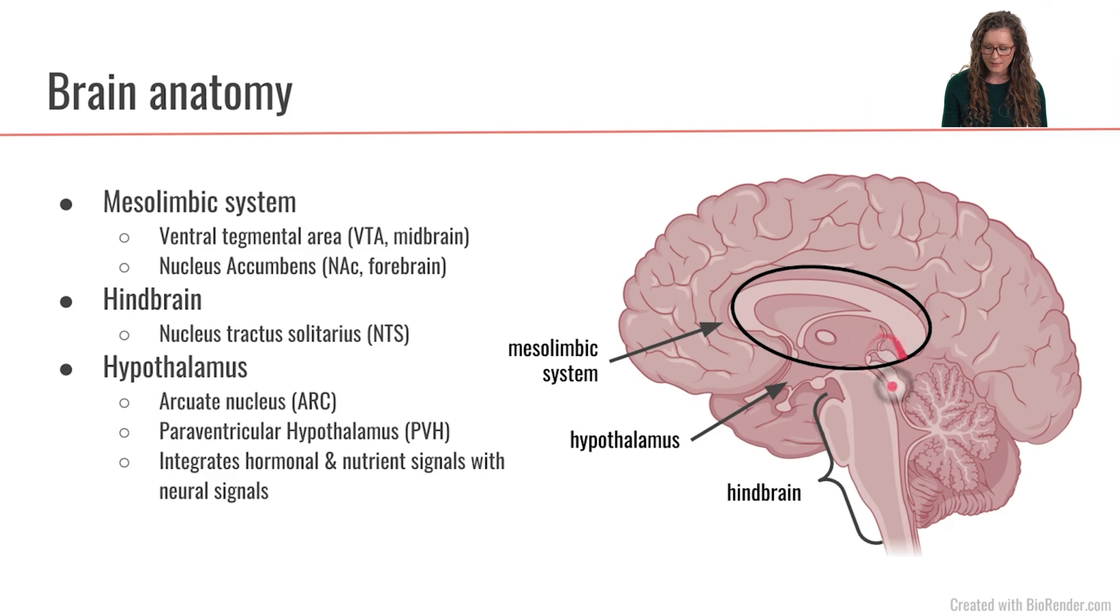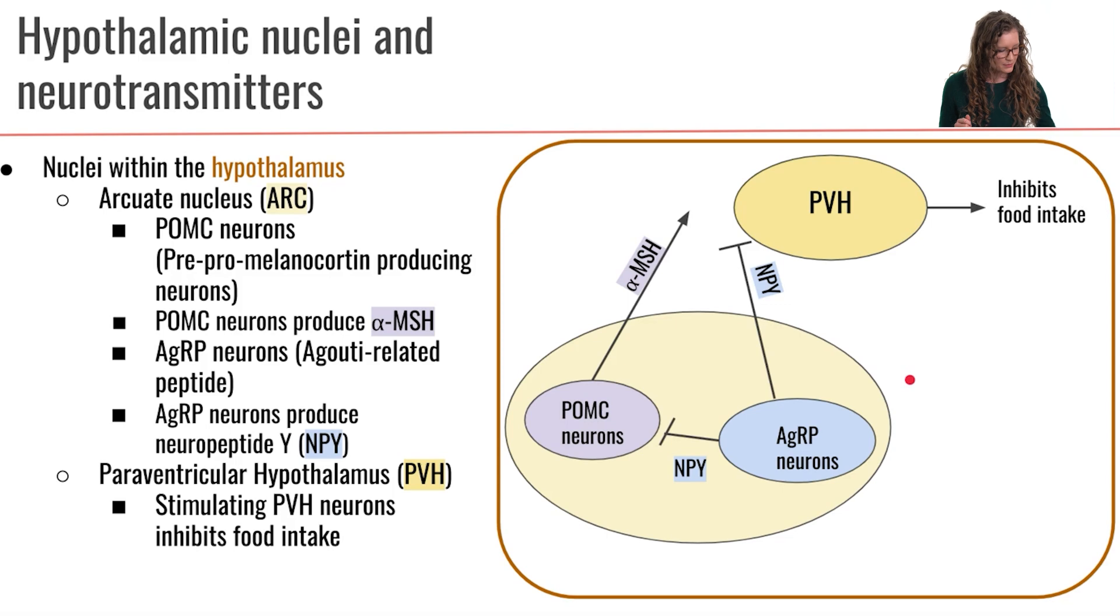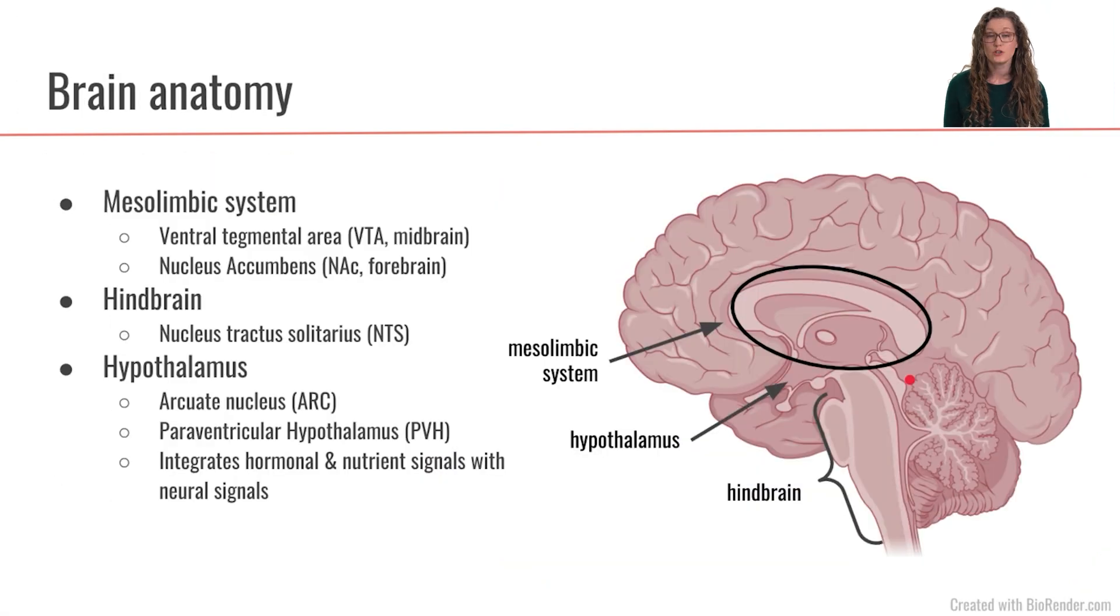So the VTA, the ventral tegmental area, is more in the midbrain region. And then the nucleus accumbens is more in the forebrain region.